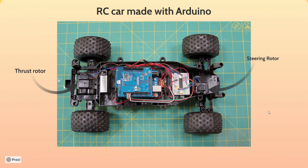Here is an RC car made with Arduino. The Arduino receives radio signals from the user's controller and creates outputs for the steering rotor and thrust rotor to control the car.